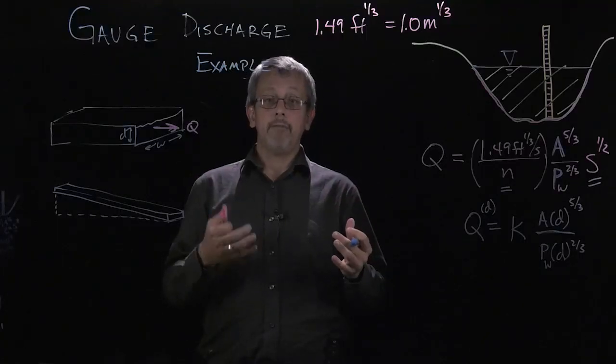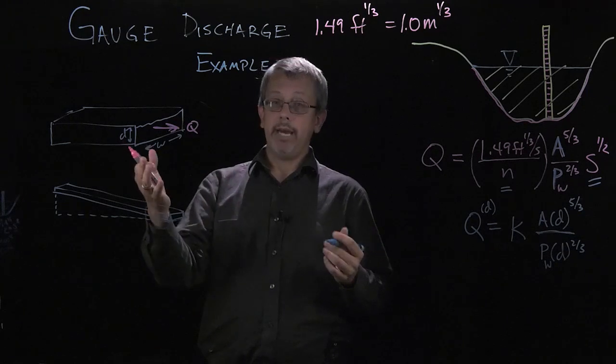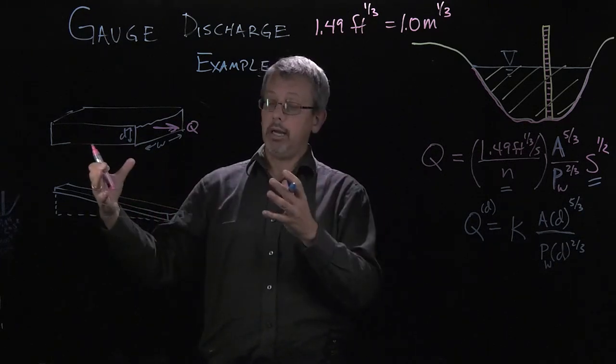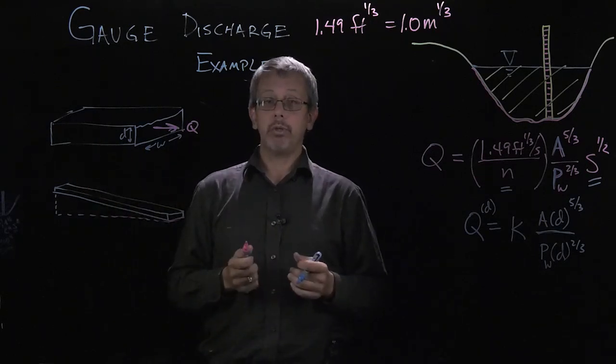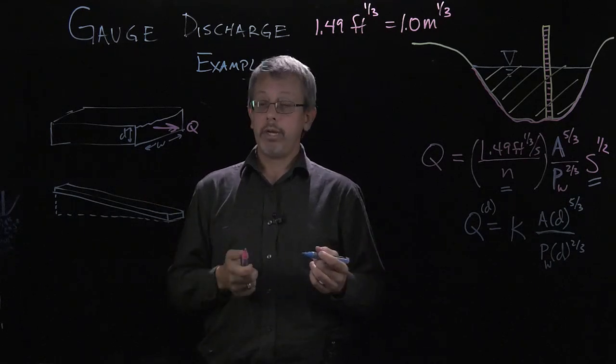So let's consider an example of gauge discharge. In a case here we have a raceway, basically some sort of area that's a rectangular area that's meant to transport water from one place to another, and we're interested in knowing how much flow is going through the raceway.